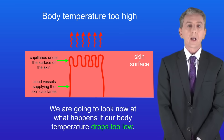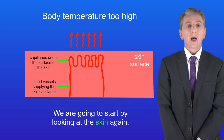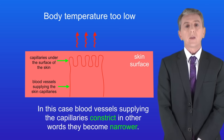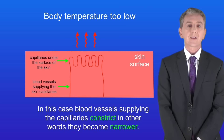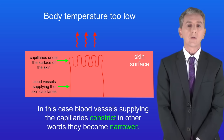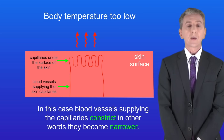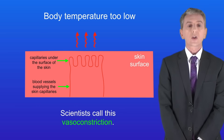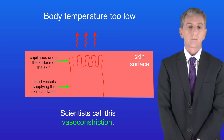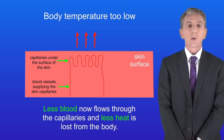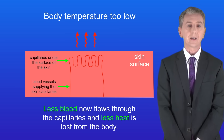Now let's look at what happens if our body temperature drops too low, starting with the skin again. In this case, blood vessels supplying the capillaries constrict — in other words they become narrower. Scientists call this vasoconstriction. Less blood now flows through the capillaries and less heat is lost from the body.